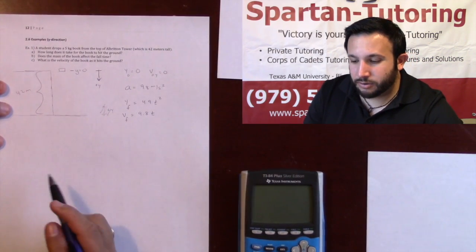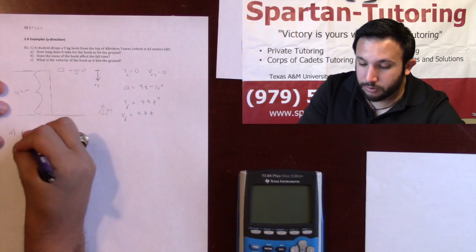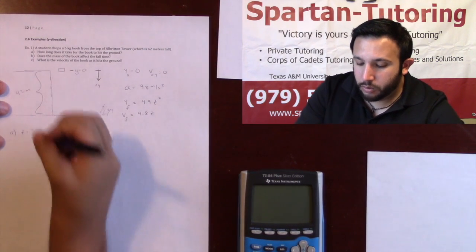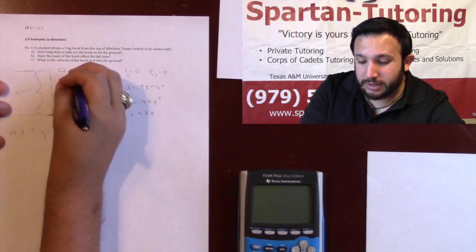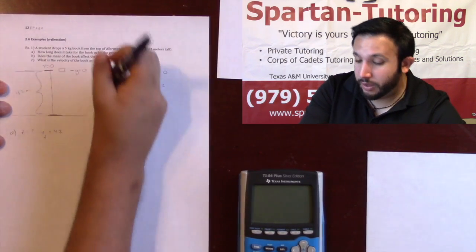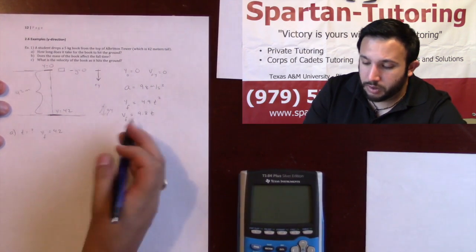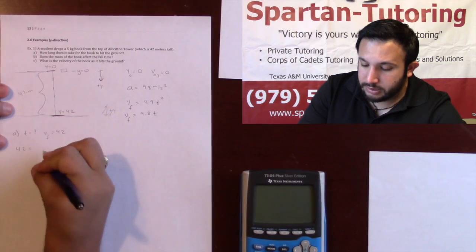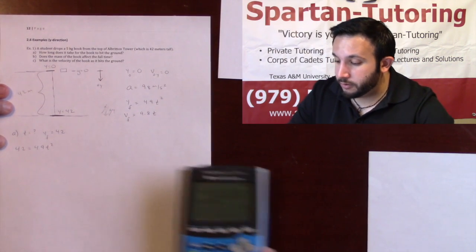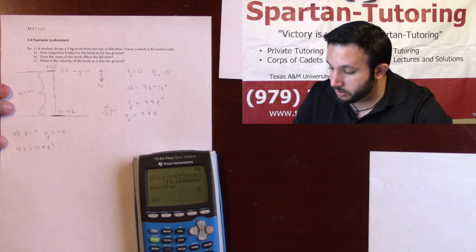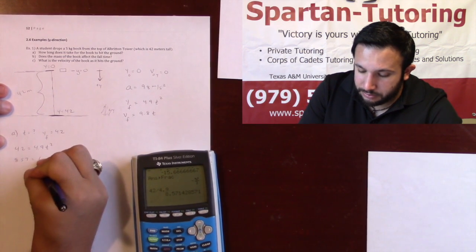Now that I have these two equations set up, let's answer the question and figure out what they want. Part a, how long does it take, so t is what I'm looking for, for the book to hit the ground. What I want is I want my yf to be 42, because if this is y equals zero, remember this is y equals zero and my positive y is down, this will be y equals 42. So all you got to do is 42 is equal to my 4.9 t squared. Now let's do a little bit of algebra to solve for that. Divide it by 4.9, 42 divided by 4.9 is, we'll call that 8.57.